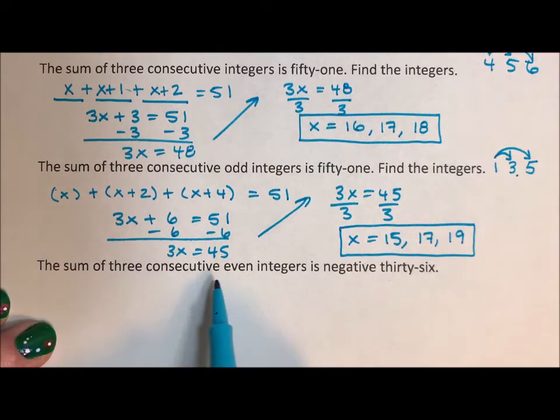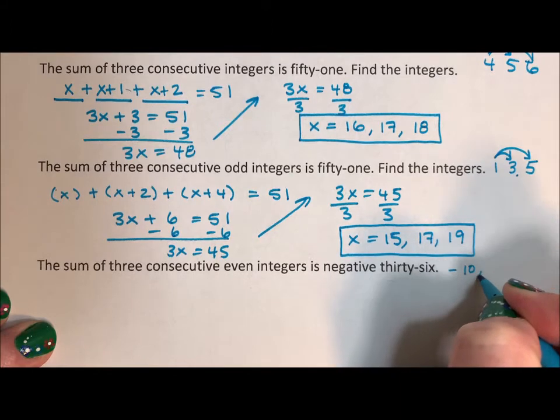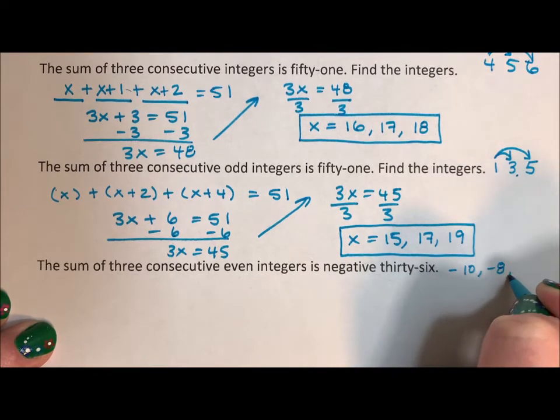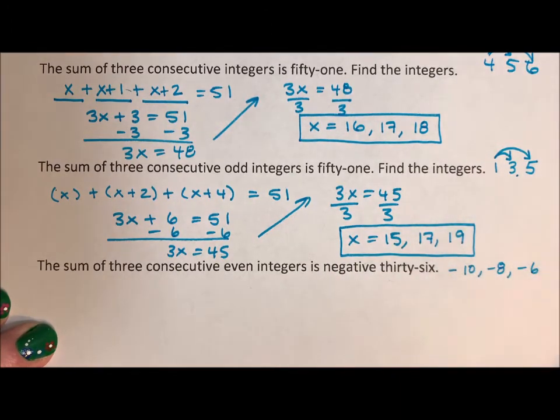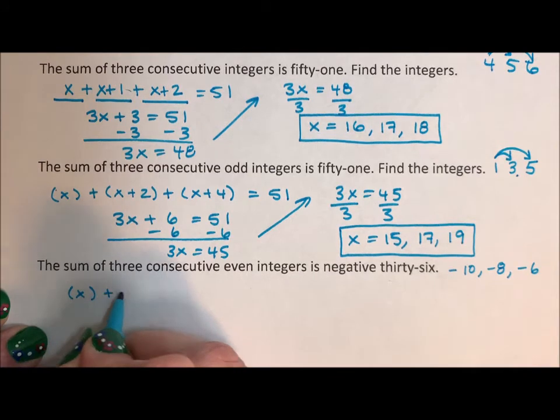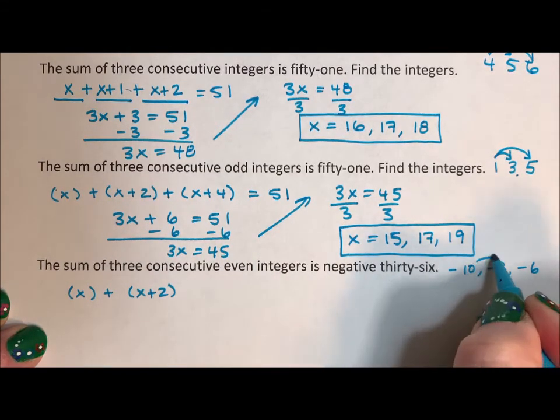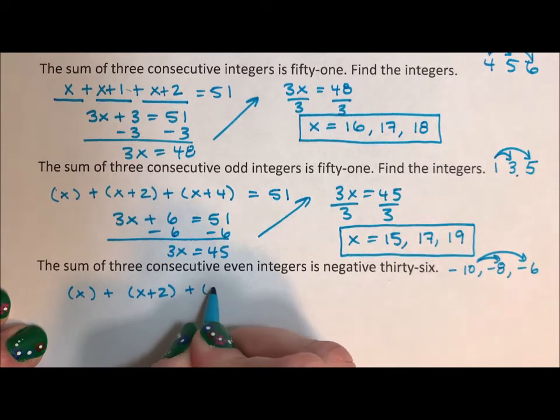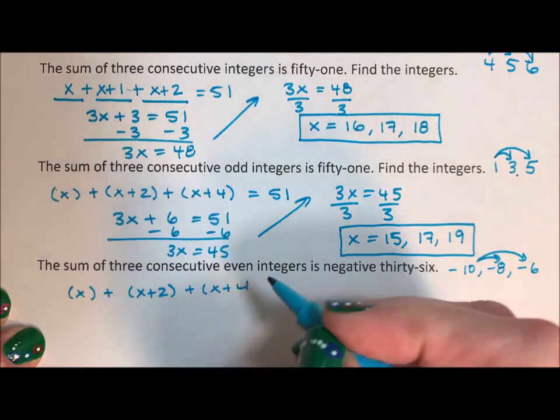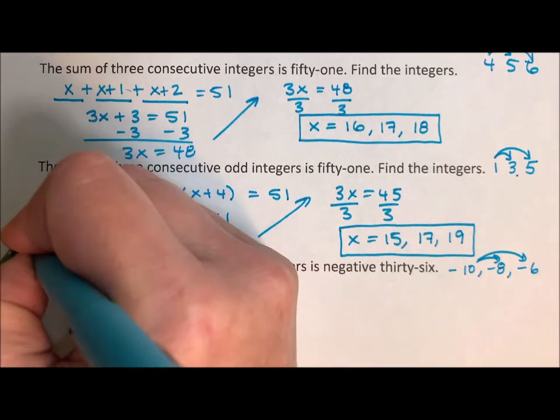The sum of three consecutive even integers is negative 36. So that would be like negative 10, negative eight, and negative six. Well, negative 10, that could be x. To get to negative eight, I'm adding two. And then I get to negative six from 10, I'm adding four.